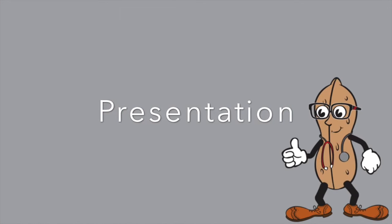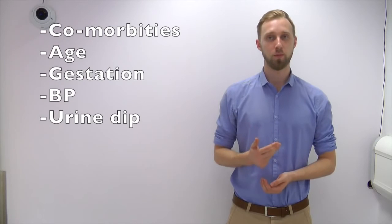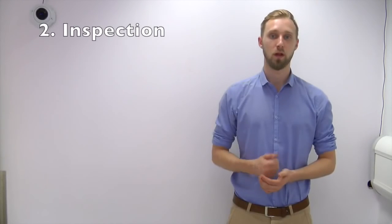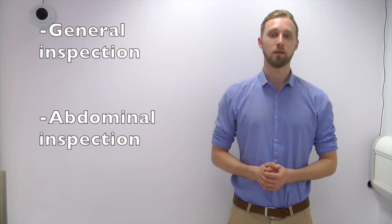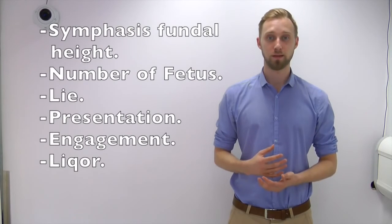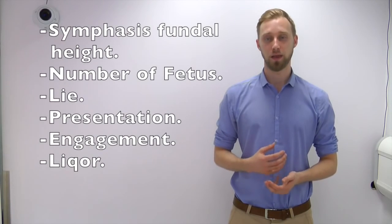Now, a guide to presenting the case. To present a history, there are four key areas. Number one: give a brief history of the lady — state her co-morbidities, her age, the gestational age, her BP and her urine dipstick results. Number two: describe inspection — firstly describe her in general, then describe the abdomen. Number three: describe the uterus — the symphysis fundal height, the number of foetuses, the lie, the presentation, engagement and the quality of the liquor. Number four: assess the foetal heart rate using a Pinard stethoscope.